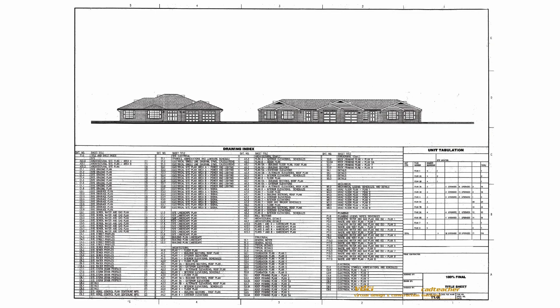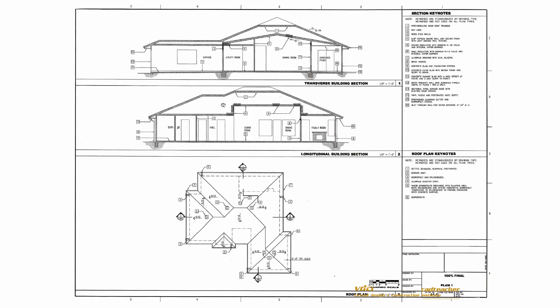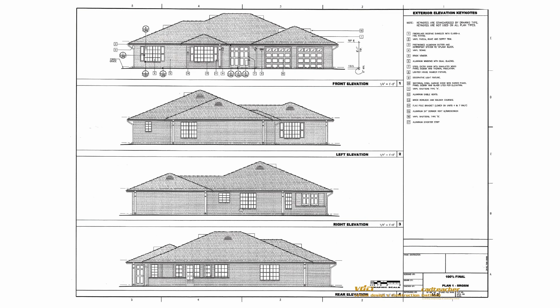These are some more drawings that we work with in our AutoCAD classes. We have the building elevations, the drawing index, and the floor plan. You can see this is a different project type, but things are similar — we have the sections, the window symbols, the door symbols, and different call-outs for the finished materials for the floor, ceiling, and walls. Building sections, roof plans, and building elevations.